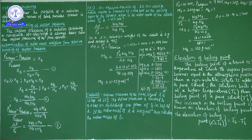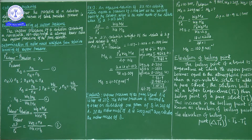So dear students, in this class we will learn about Colligative Properties. Colligative Properties means properties which depend on the number of particles present in the solution. The number of particles depends on the solution properties.